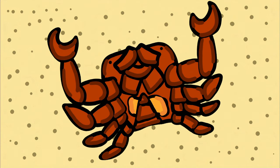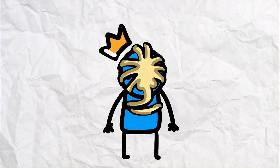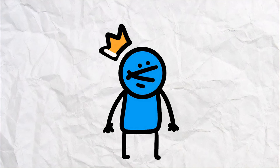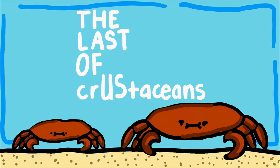Sacculina manipulates the crab's behavior and physiology, like in the alien movies, essentially turning it into the host that nurtures the parasite's larvae. So in simple terms, this disease is like the last of us, but for crabs.